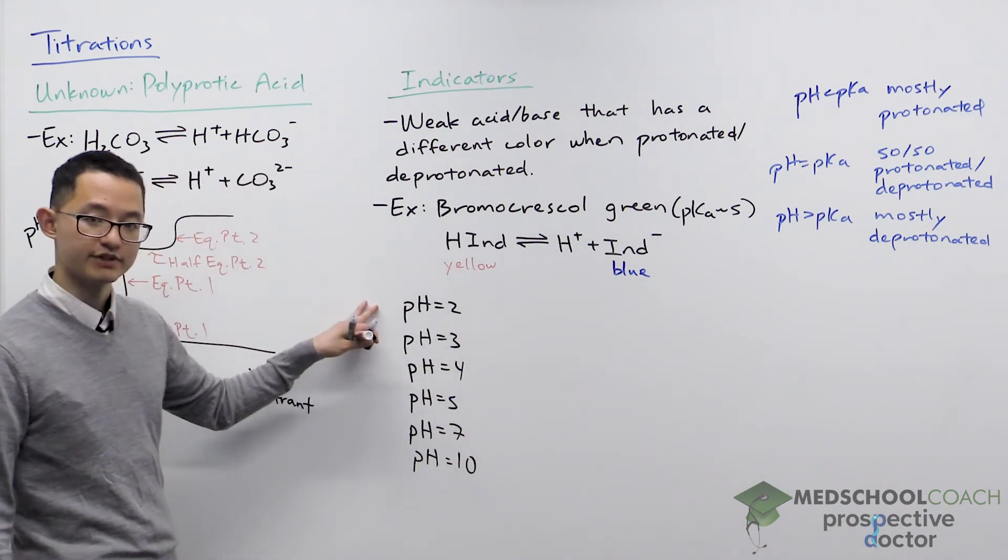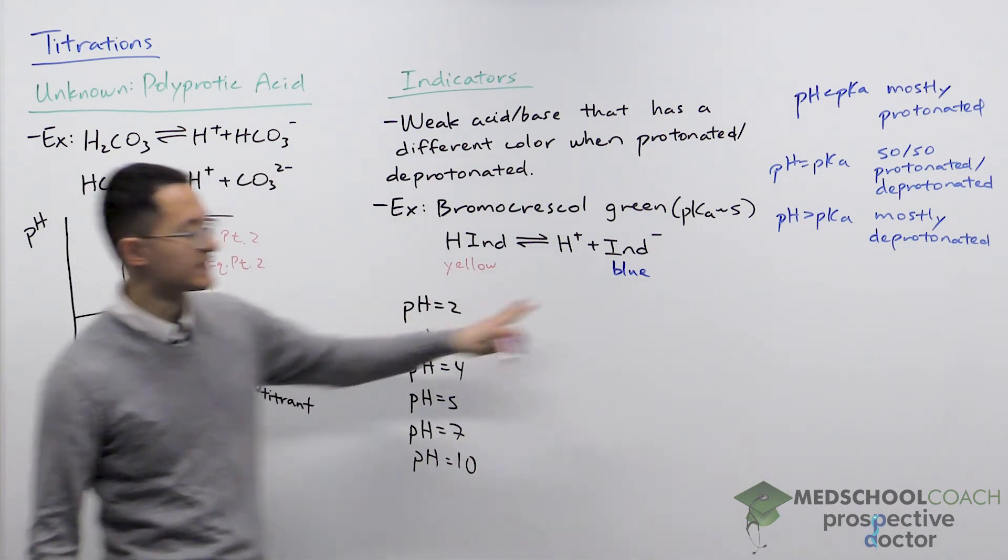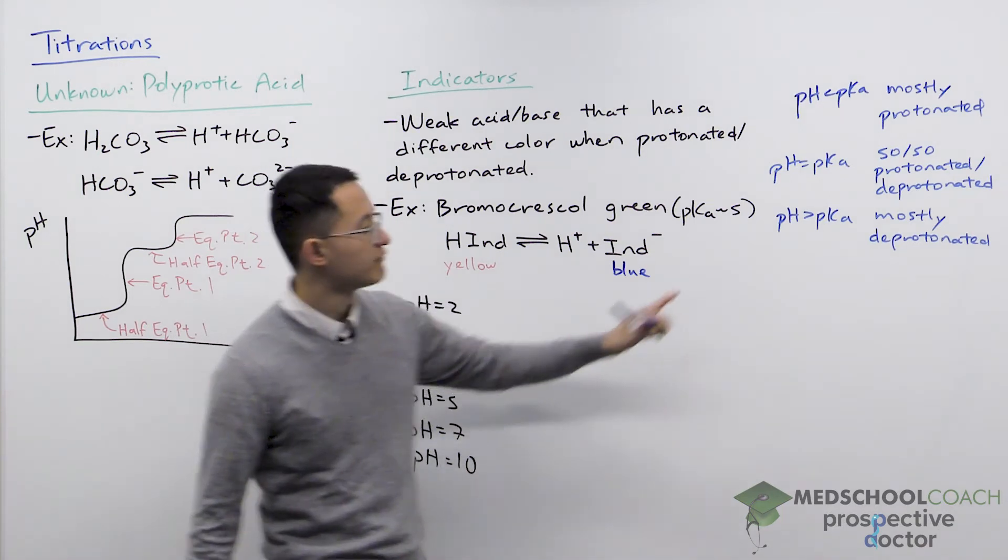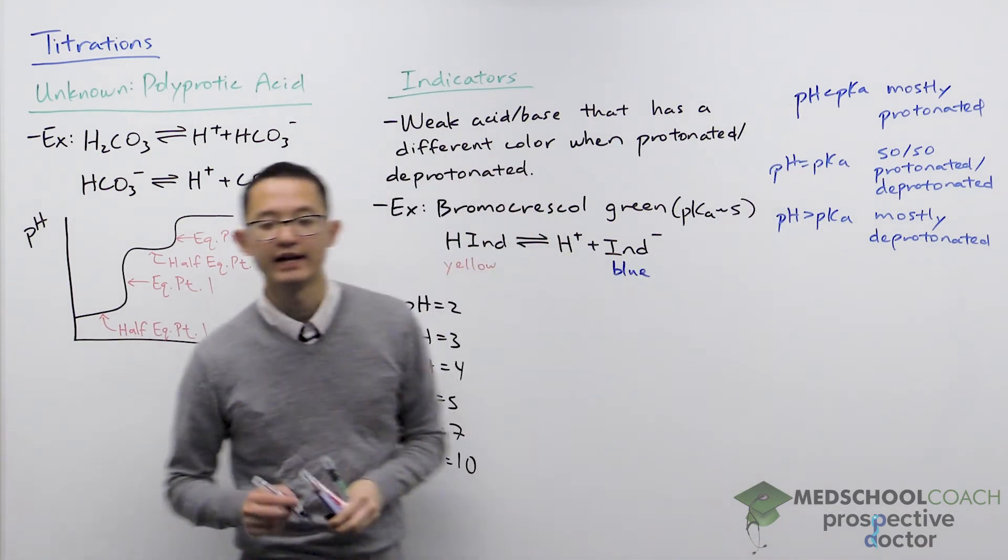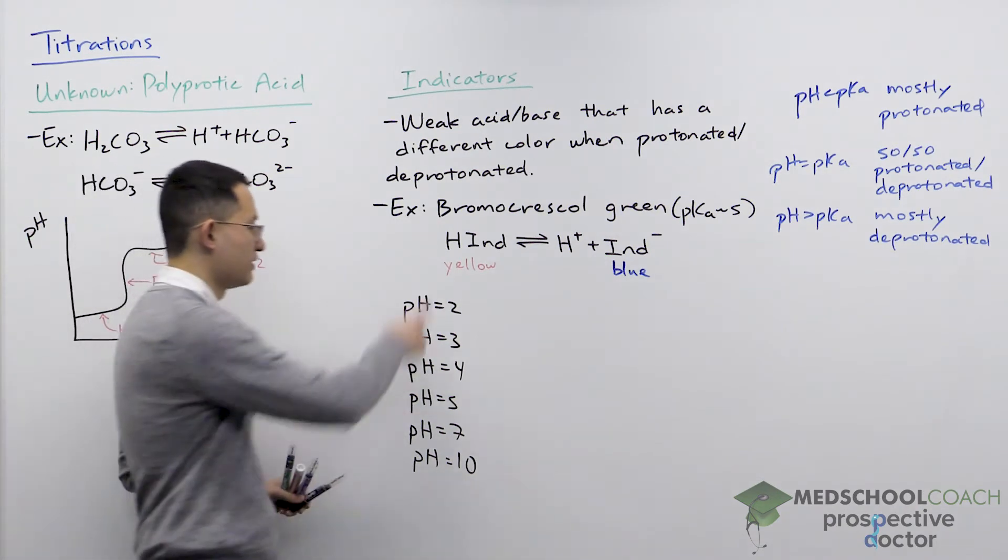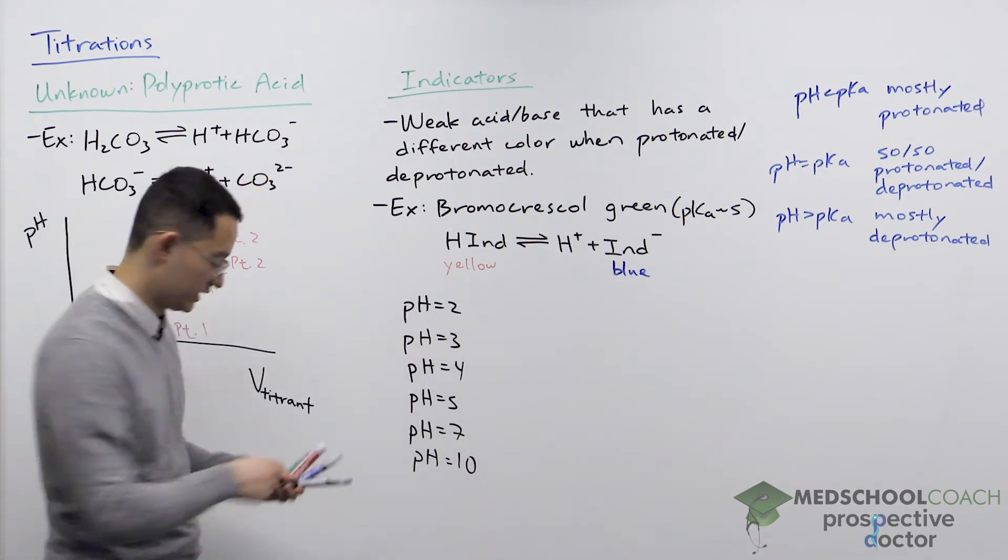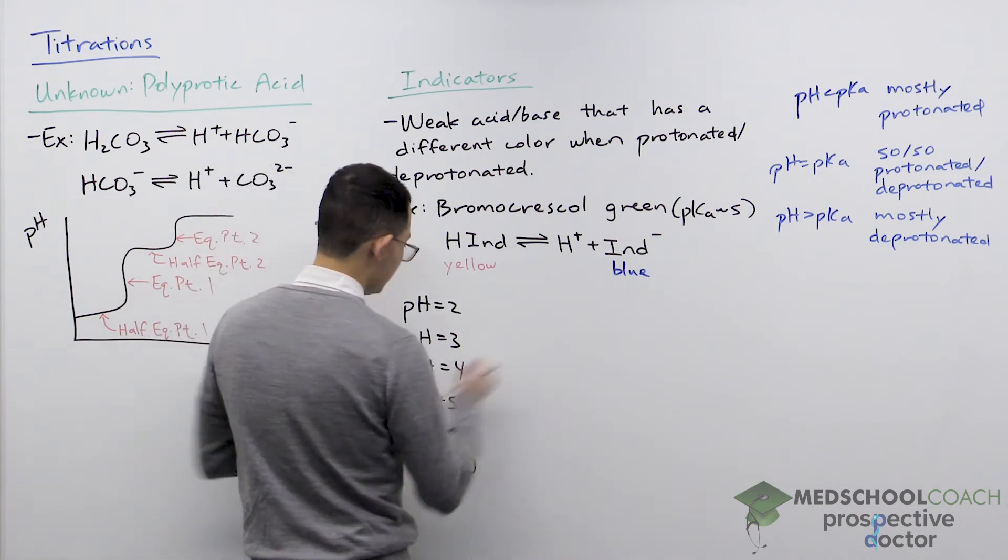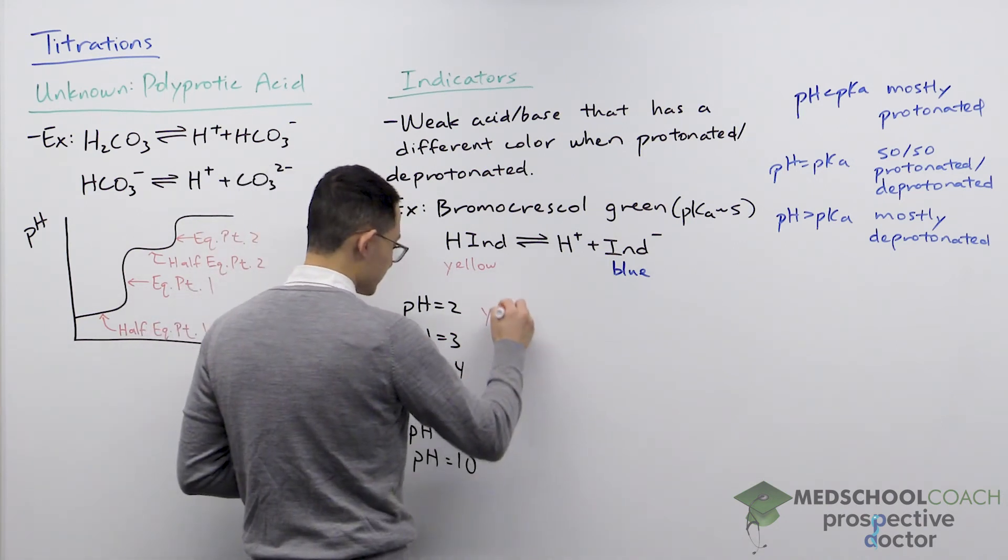We start at a pH of 2. 2 is less than the pKa of 5. And when the pH is less than the pKa, that means the molecule is mostly protonated. And when it's protonated, our molecule is yellow. So that means at a pH of 2, we should have a yellow solution.